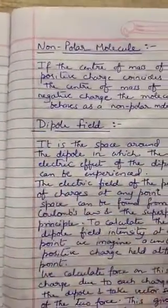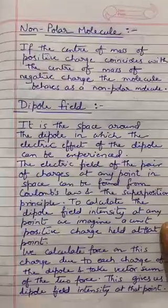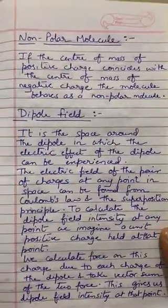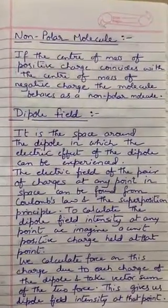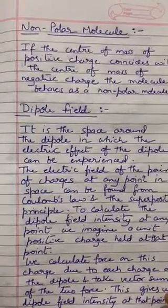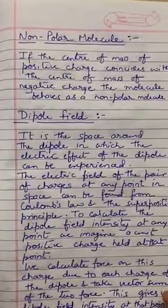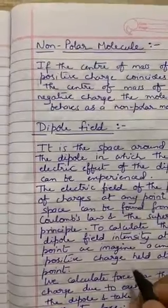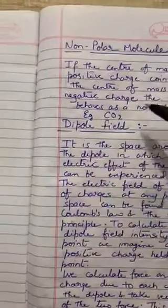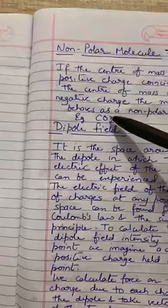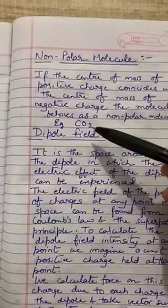The next one is non-polar molecule. If the center of mass of positive charge coincides with the center of mass of the negative charge, then the molecule behaves as a non-polar molecule. For example, O2 — the center of masses coincide. Similarly, for CO2, the atomic number of C is 6 and the atomic number of O is 8, so the atomic numbers are very near to each other, and hence they can act as a non-polar molecule.